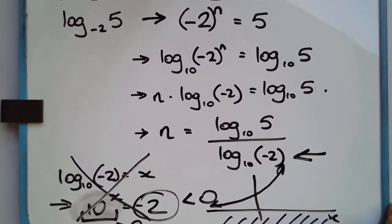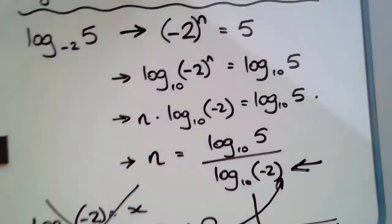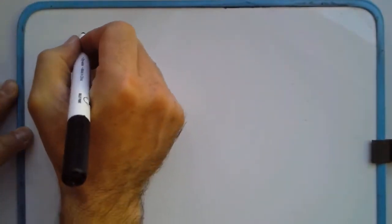We limit them to positive numbers. Now, does that mean that we cannot use negative bases at all? Is there an example where it does work? Yes, there is, in fact.